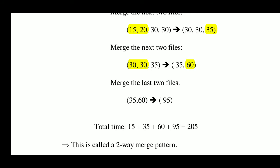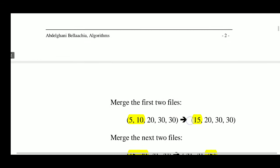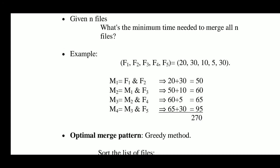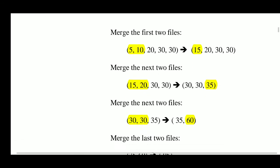Total time is O(15) + O(35) + O(60) + O(95) = 205. When we applied the greedy approach it took only 205 time units, but when we did it by the input sequence (first-come first-serve method) it took 270 time units. So O(205) is smaller than O(270).